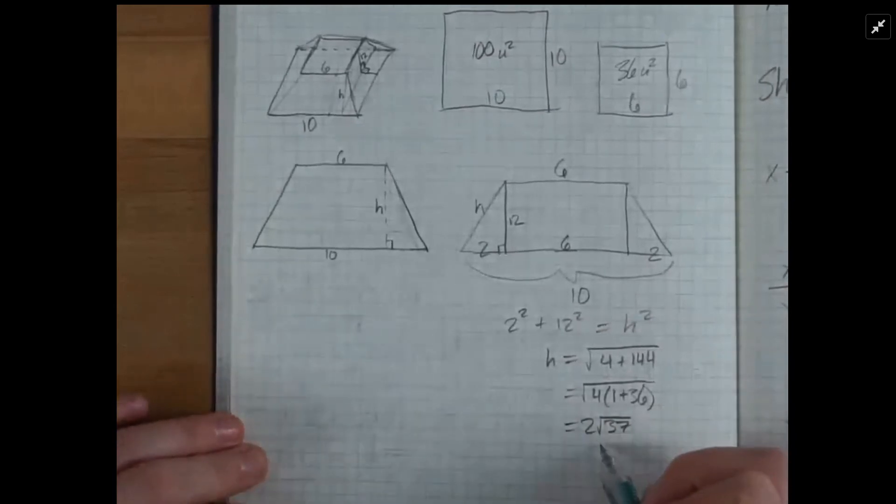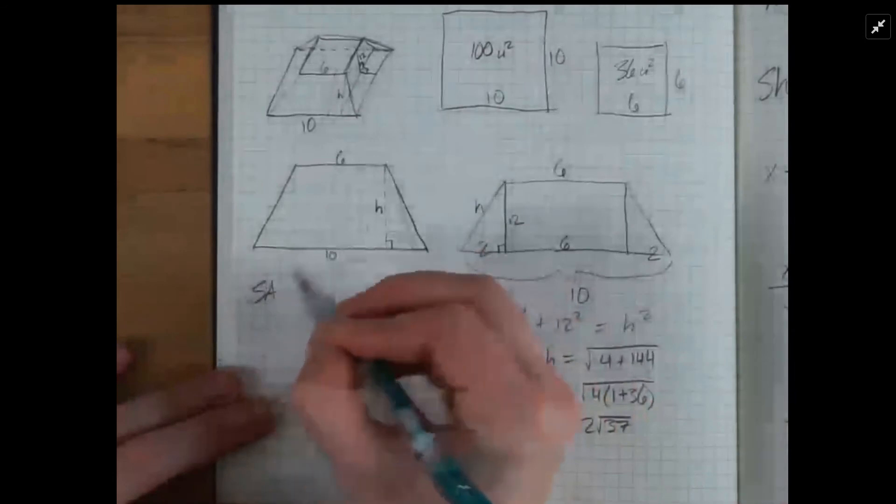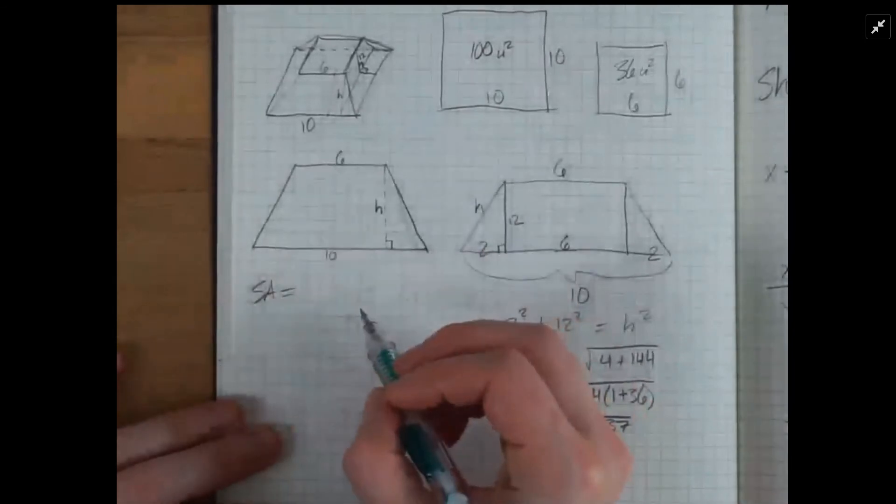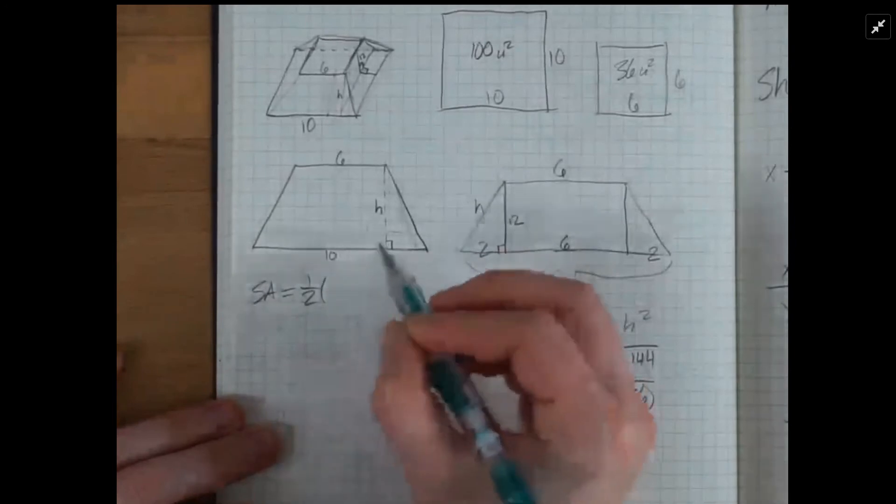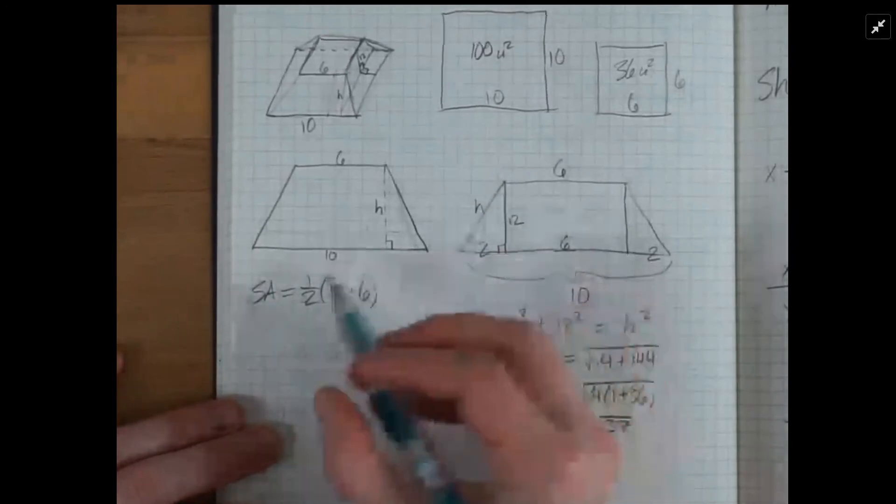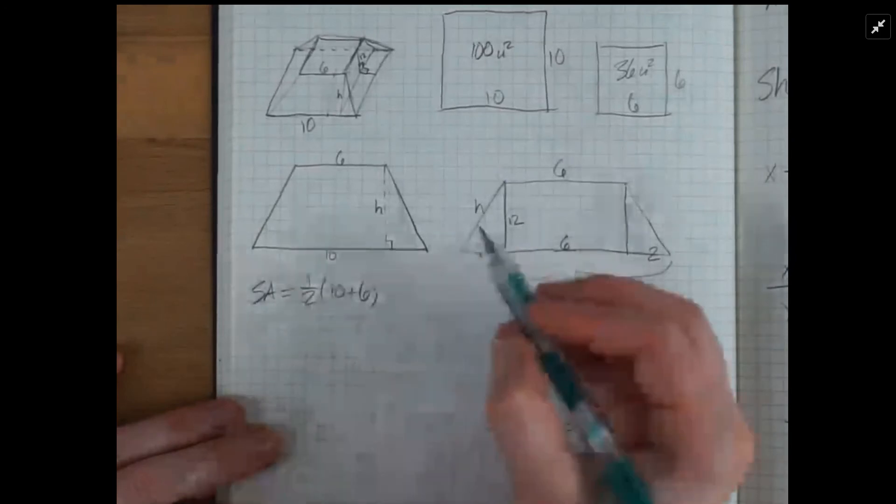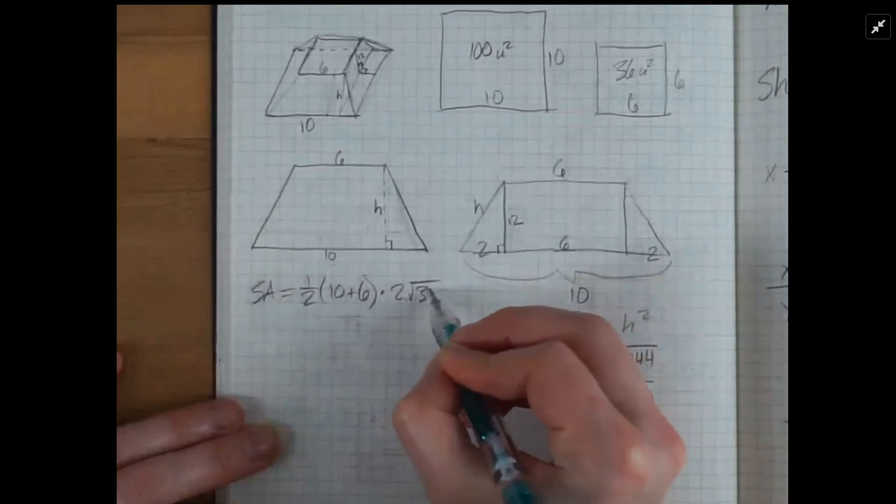So we plug that number for h over here into our surface area for a trapezoid formula, which is the average of the base and the top. So half of 10 plus 6 times 2 square root of 37.